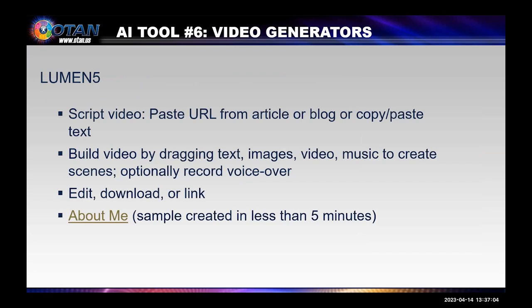The sixth category of AI tools is video generators. Lumen5 is a video creation platform that enables anyone with no prior video making experience to create video content. Just paste a URL from an article or blog post, or copy and paste text, and you can build your video by dragging text, images, video, and music to create scenes. You can record a voiceover. The video can be edited at any time, and after publishing, it can be downloaded or linked for sharing. I made an About Me video in less than five minutes. There are many video generator alternatives listed on the handout along with their descriptions.